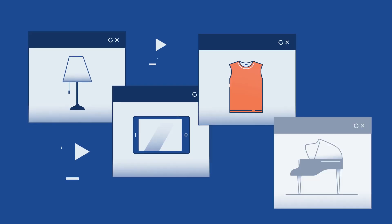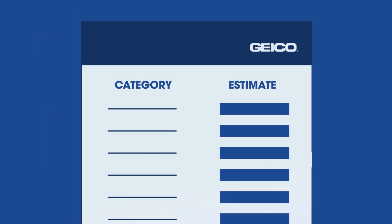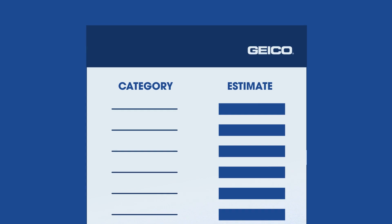So take pictures and videos of the items in your home and use the GEICO Personal Property Cost Calculator at geico.com to tally your item's worth.